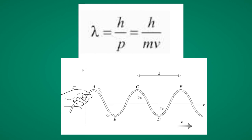We can then calculate a wavelength associated to anything — even to persons — if we know the mass of the person and the magnitude of the velocity of motion of the same person.